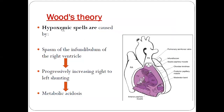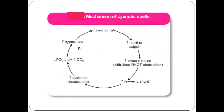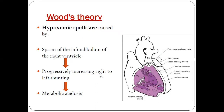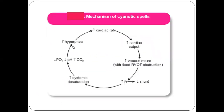The first theory is Wood's theory, which states that hypoxic spells are caused by spasm of the infundibulum of the right ventricle. The infundibulum is present at the right ventricular outflow tract, and when there is spasm, stenosis occurs. Blood cannot flow from the right ventricle through the pulmonary valve, so it all shunts to the left ventricle through the VSD, leading to admixture, systemic desaturation, and continuation of the cycle.